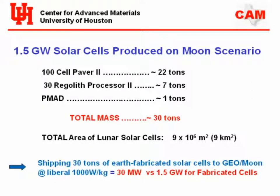A typical coal-fired power plant runs about one billion dollars per gigawatt. Nuclear runs between five and seven billion per gigawatt. The cost includes launch, PMAD, integration, interconnection — all of that. Current costs to the Moon are estimated at around $75,000 per pound.